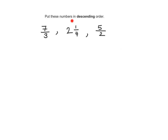Here we are being asked to put these numbers in descending order — from largest to smallest. We have two improper fractions and one mixed number. In order to compare fractions, you need the denominators to be the same, so I'll convert the mixed number into an improper fraction. 2 times 4 is 8, plus 1 is 9, so this becomes 9 over 4.